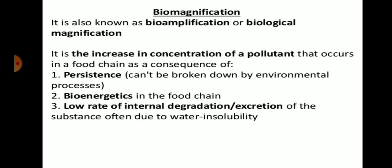Let's start with biomagnification. Biomagnification is also known as bio-amplification. It is the increase in concentration of a pollutant that occurs in a food chain. Biomagnification refers to the concentration of substances such as pesticides, heavy metals, or chemical substances that are harmful to living organisms — their concentration increases in the food chain. The food chain may be aquatic, terrestrial, or other types.